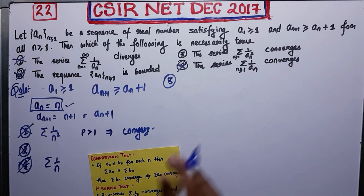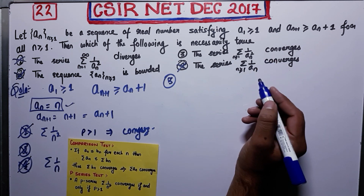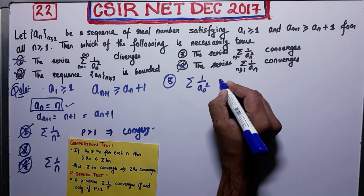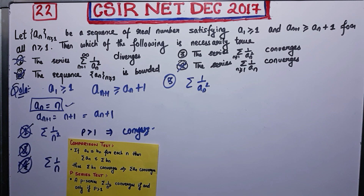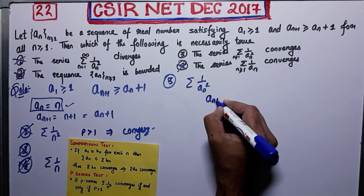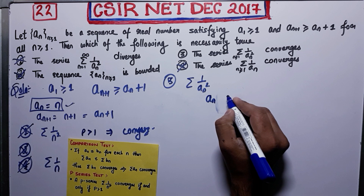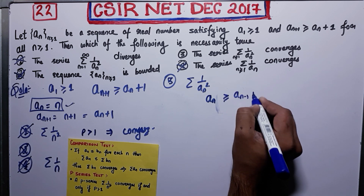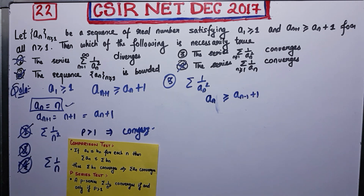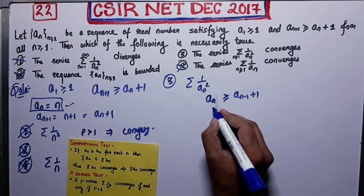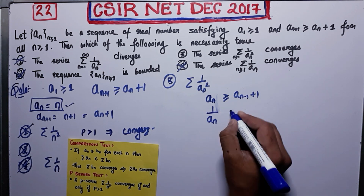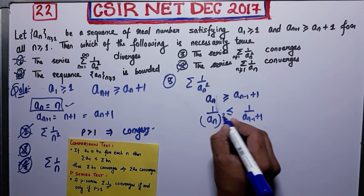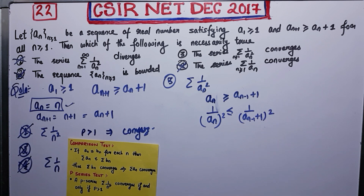Now let us come to option 3, which says summation 1 over a_n² converges. This is what we need to prove. From the given condition, a_n ≥ a_{n-1} + 1. Taking the reciprocal: 1/a_n ≤ 1/(a_{n-1} + 1). Then squaring both sides: 1/a_n² ≤ 1/(a_{n-1} + 1)².